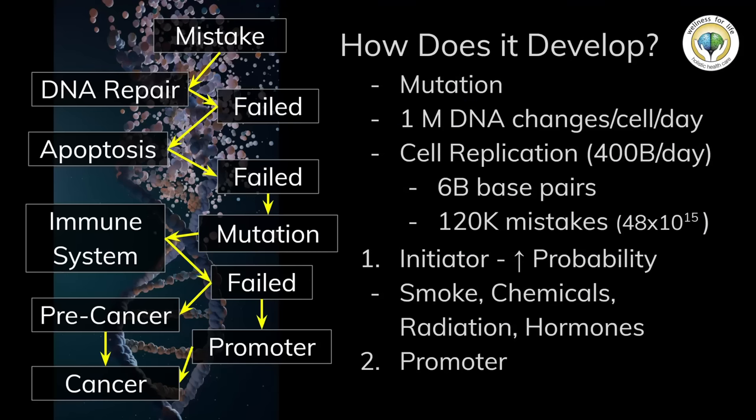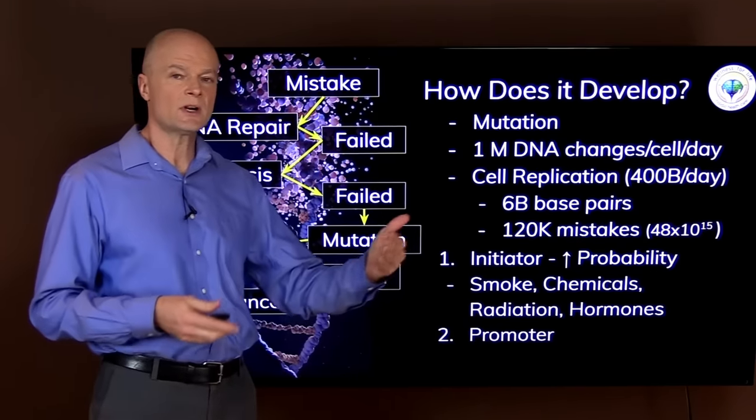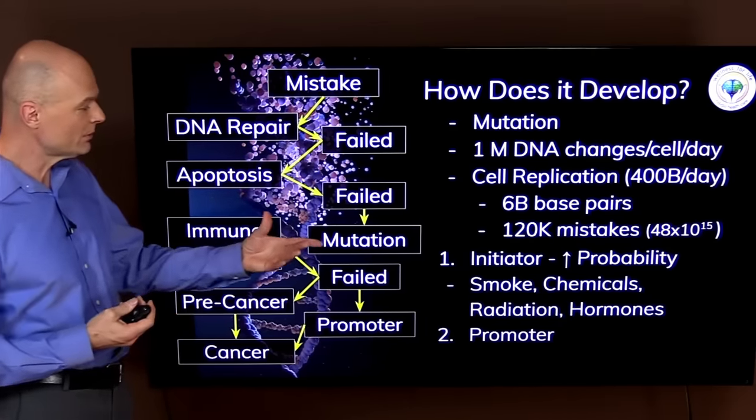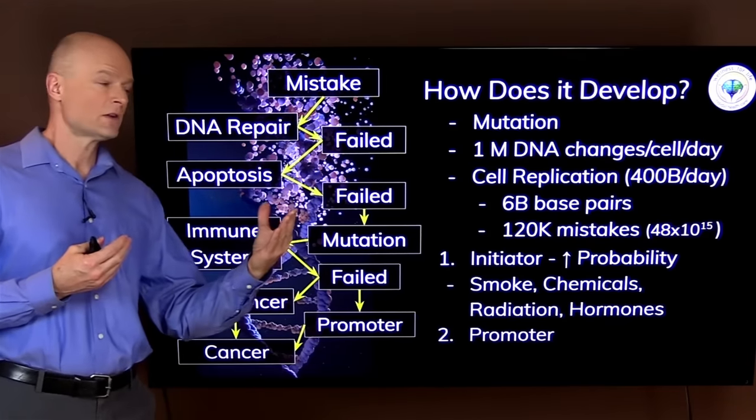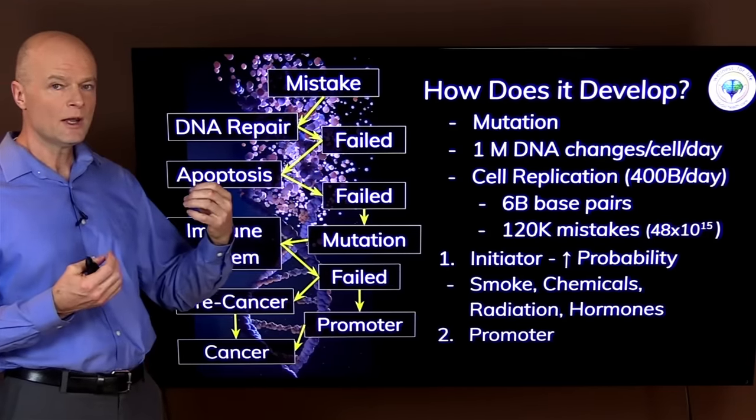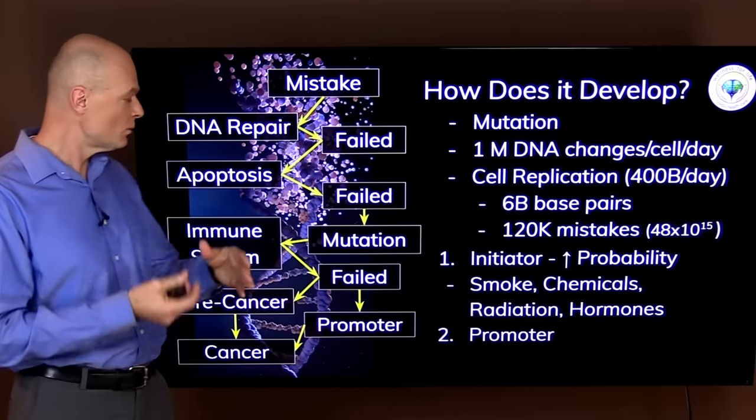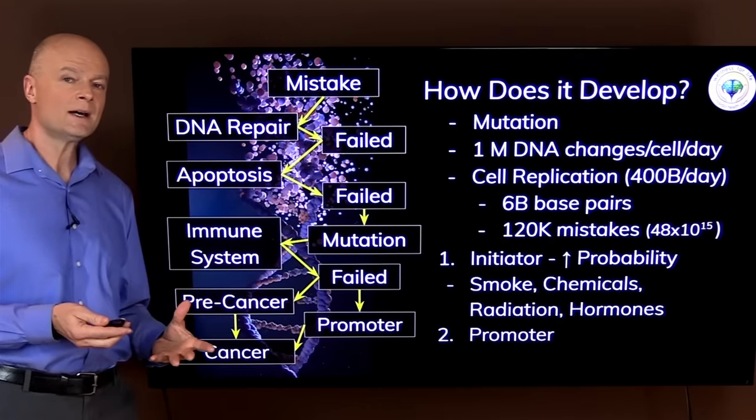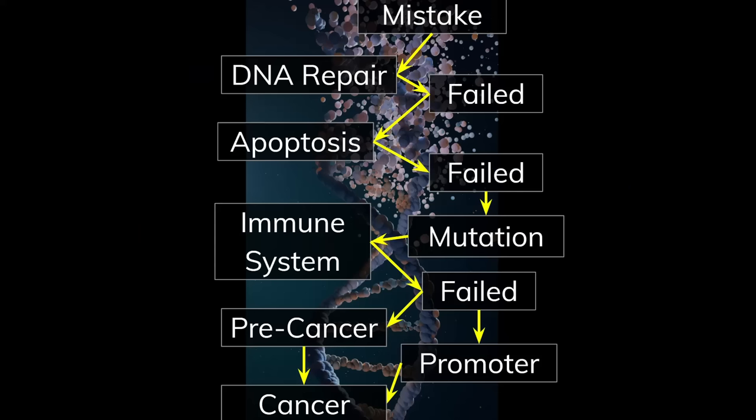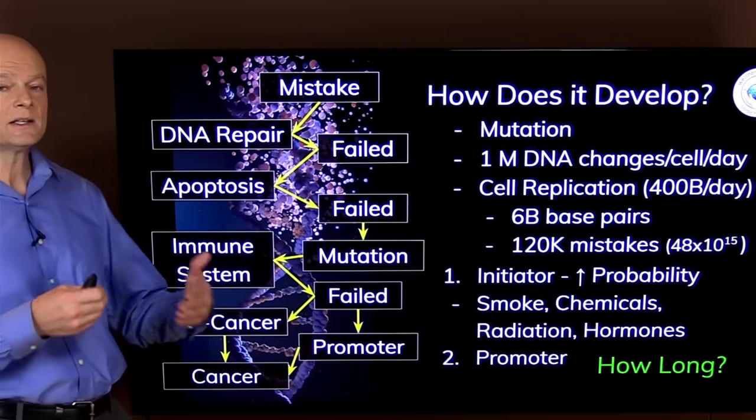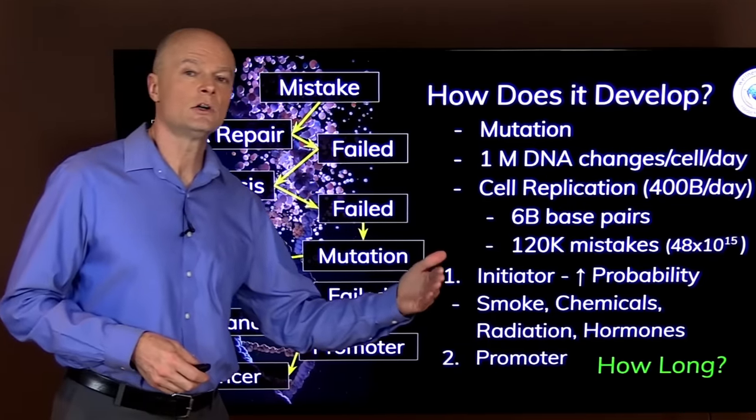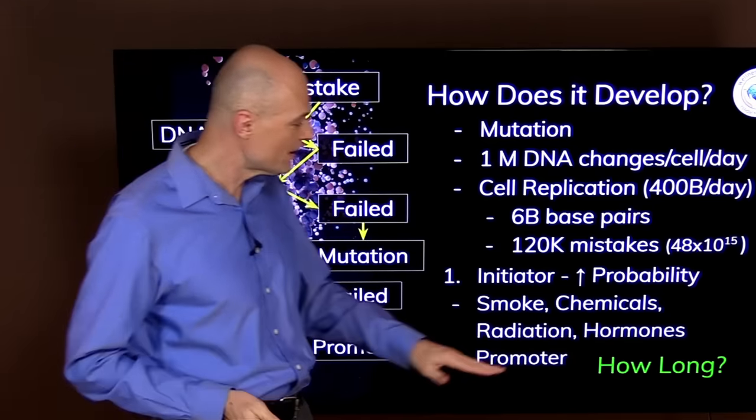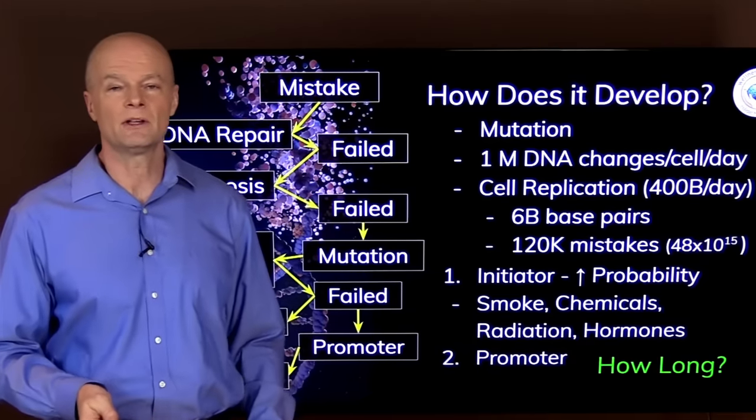We also need a promoter. Something to drive the process forward. A promoter would be something that feeds the cancer because the cancer needs a lot of food. But it could also be something that interferes with the body's immune system and the body's defenses. And if all of this is in place for quite some time, now we can develop cancer. But even then it's not a done deal because it usually takes a long time even after that to where we actually have cancer or where it's dangerous.